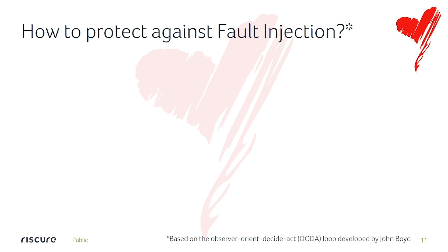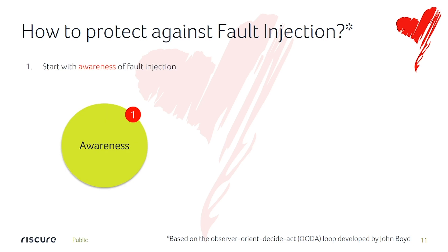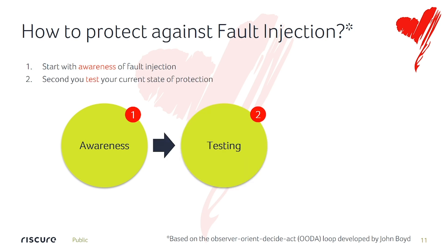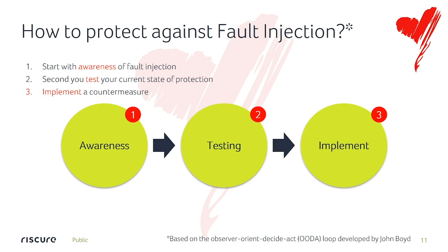To protect yourself against fault injection, I look at the loop developed by John Boyd: the Observe, Orient, Decide, Act loop — I also call it the Sense, React, Act loop. First, sense: we need awareness — is fault injection a problem for my system, what are my assets, what am I protecting? Second, test and react: we test against the current state of our protection in software and hardware. Then we implement a countermeasure — we act on what the test revealed. This is a loop you keep iterating between testing and implementation until you find your right mitigation level.